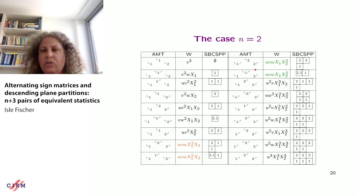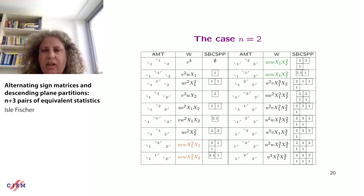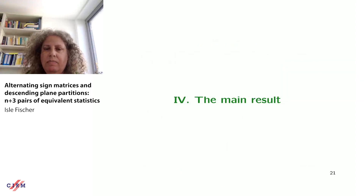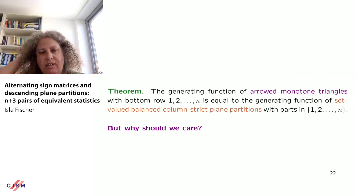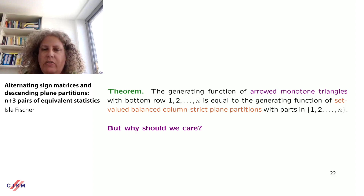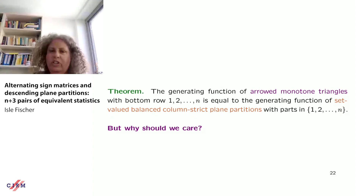The main result: the generating function of arrowed monotone triangles with bottom row 1, 2, ..., n equals the generating function of set-valued balanced column strict plane partitions with parts in {1, 2, ..., n}.